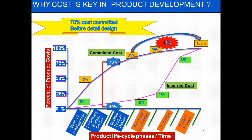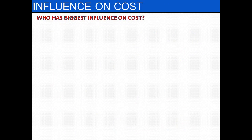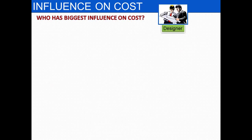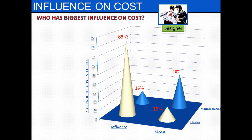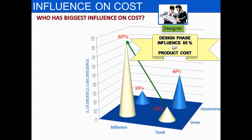Once detail design is done, you have only 15 percent of the product cost that can be optimized — already 85 percent of the product cost is decided. So it is very essential to optimize cost at the earlier phases of product development. Who has the biggest influence on cost? The designer. The decisions the designer makes during product development, even though the incurred cost is only 15 percent, decide 85 percent of the product cost. Design influences 85 percent of the product cost.